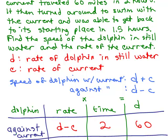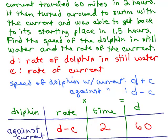Okay? So we're able to fill in the rate d minus c, the time two hours and 60 miles, two hours he went 60 miles, alright? And what else does it say?